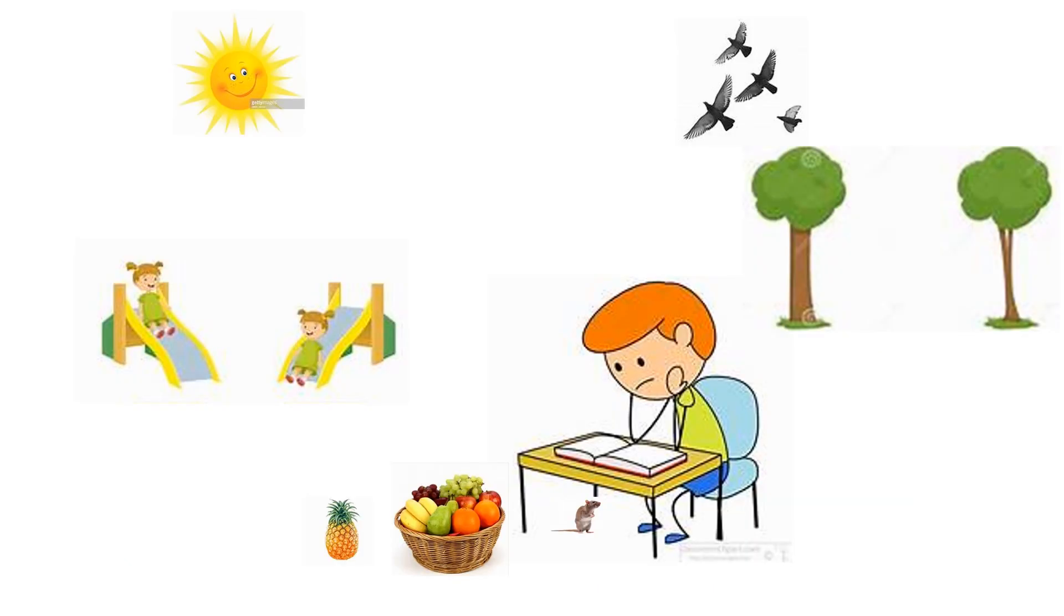Remember the picture we saw in the beginning. Here it is again. Now, we can explain the picture in a better way. We can see birds flying above the trees. We can also see a girl sitting on top of the slide.